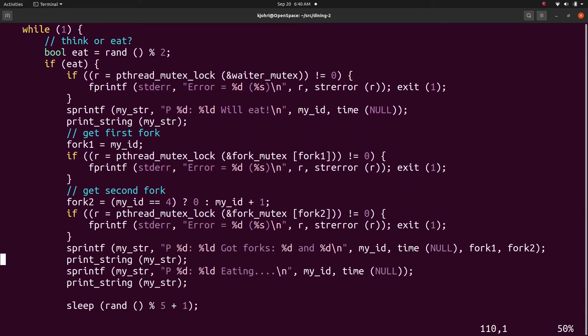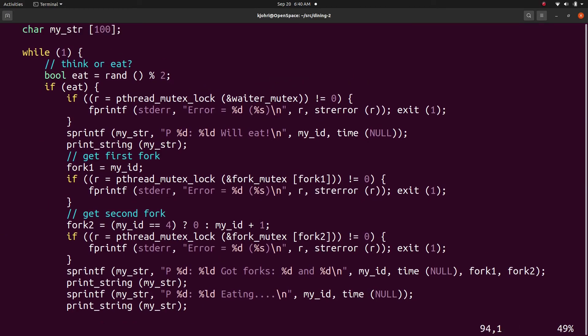And here is the philosopher code. If philosopher wants to eat, he or she takes permission from the waiter, that is, the philosopher acquires the waiter mutex. Now to get the first fork, the fork id is philosopher id. Philosopher p4 can pick up fork f4 on the left. She does not have to worry about picking up the lower numbered fork anymore. And fork 2 id is philosopher id plus 1 except for philosopher p4 whose second fork id is 0.